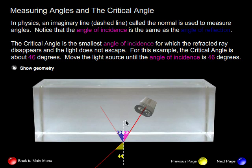Now in physics, an imaginary line, the dashed line here called normal, is used to measure angles. Notice that the angle of incidence is the same as the angle of reflection.